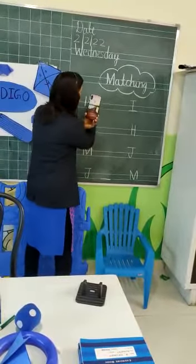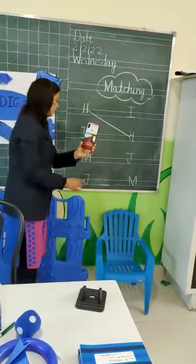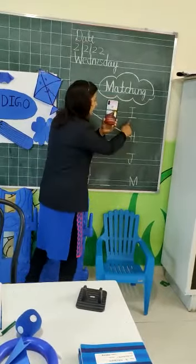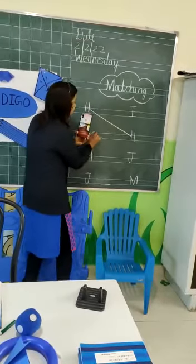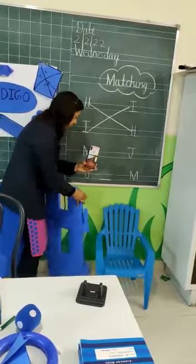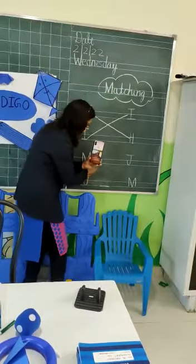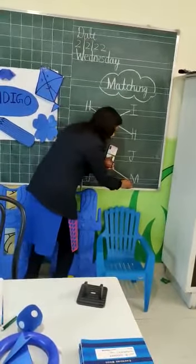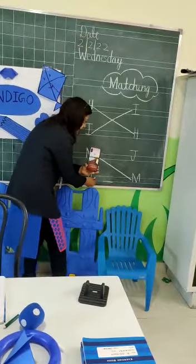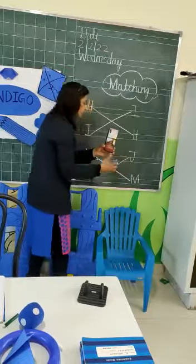We will match the letter H to H. Okay. I — where is I? Show me where is I. Here. We will match I to I. Which letter is this? M. M. Okay, which letter is this? J. There is J. Here. We will match the same letter.